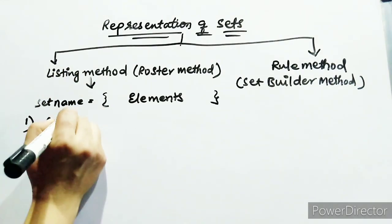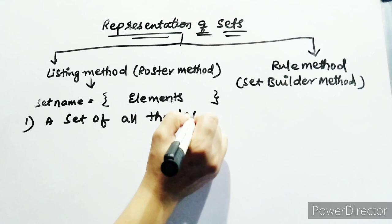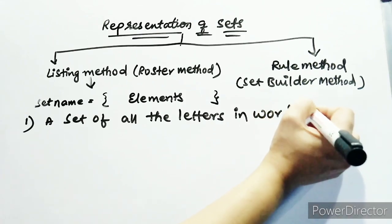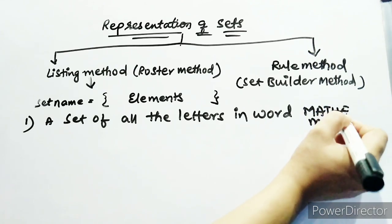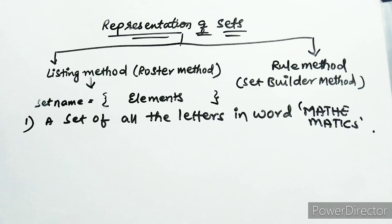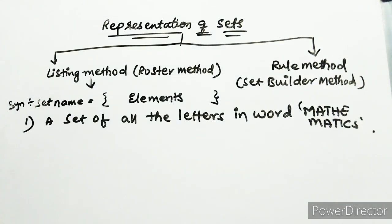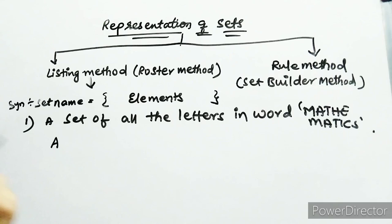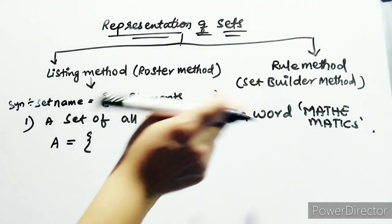Let's take one example: a set of all the letters in the word MATHEMATICS. The syntax is: write the set name — you can use any alphabet like A, B, or C — followed by equal to, then list all the elements in curly braces.